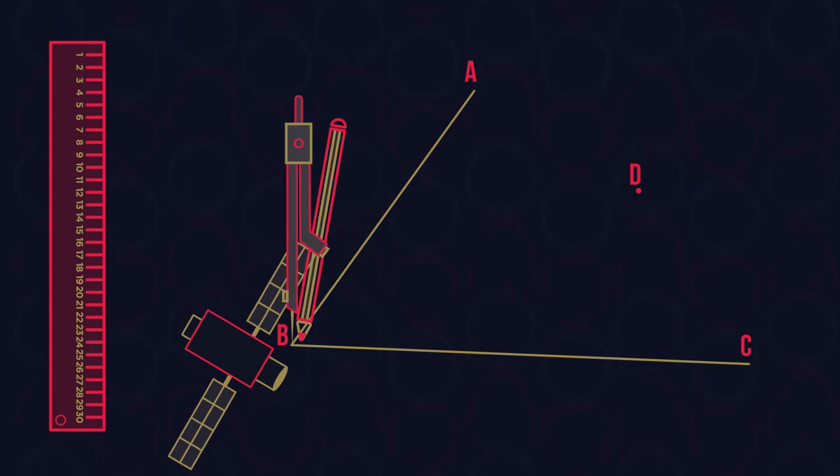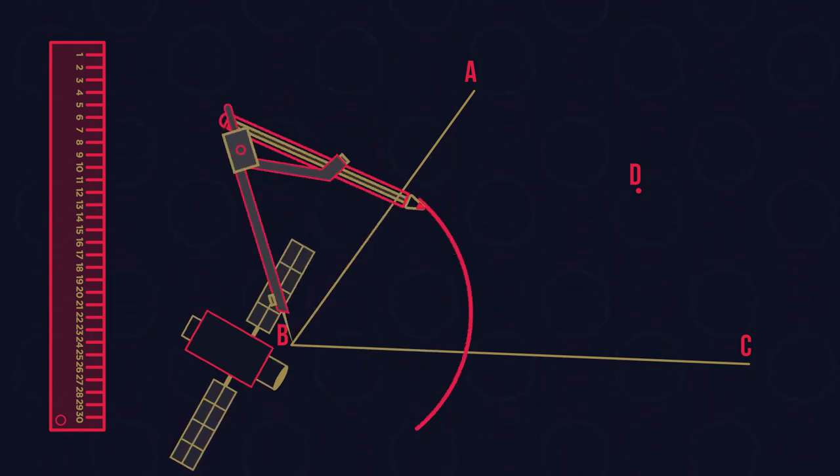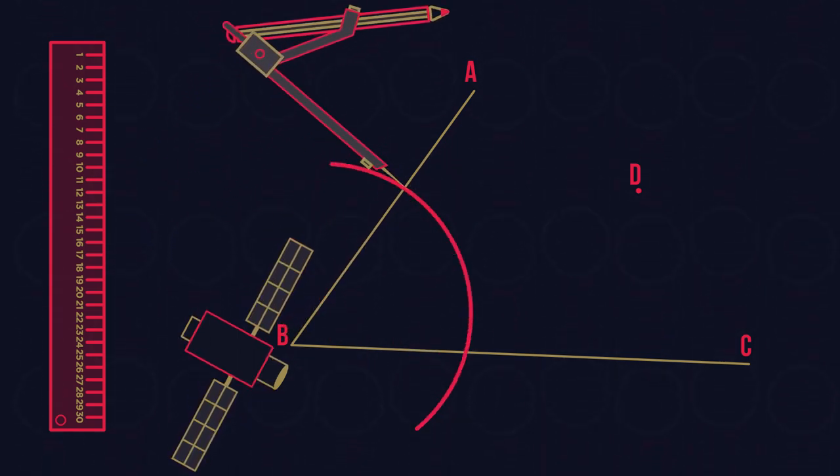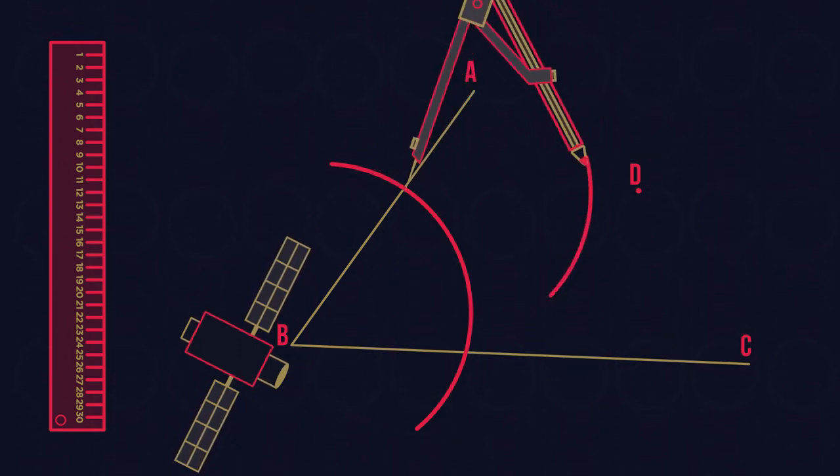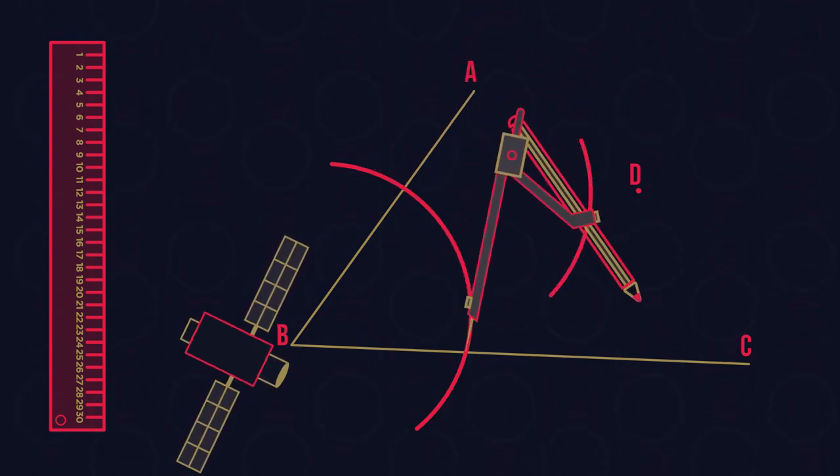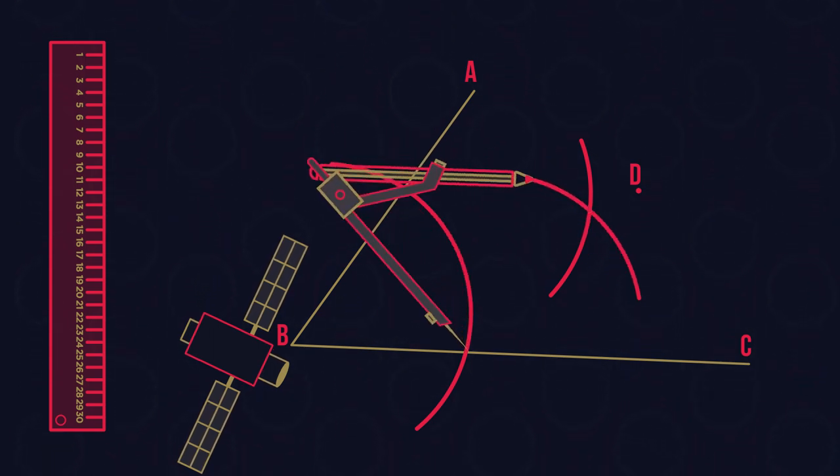Put your compass on the point and draw an arc to cross both boundaries. Then put your compass at the first place where the arc crosses the line and draw another arc. Repeat this for the second point making sure you do not change the width of your compass.